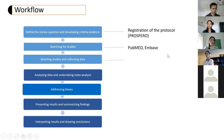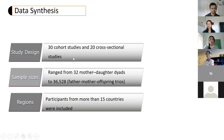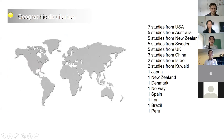This is the workflow of the meta-analysis. We started by searching articles using predefined keywords. After screening, we included 50 studies: 30 cohort studies and 20 cross-sectional studies. Sample sizes ranged from 32 to more than 36,000, with participants from more than 15 countries, mostly from Europe and the US.